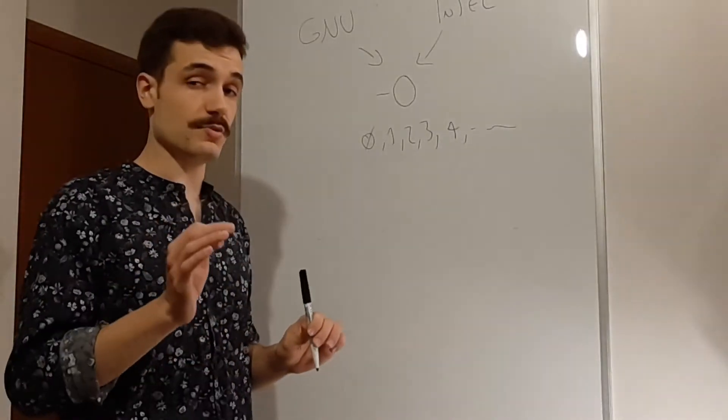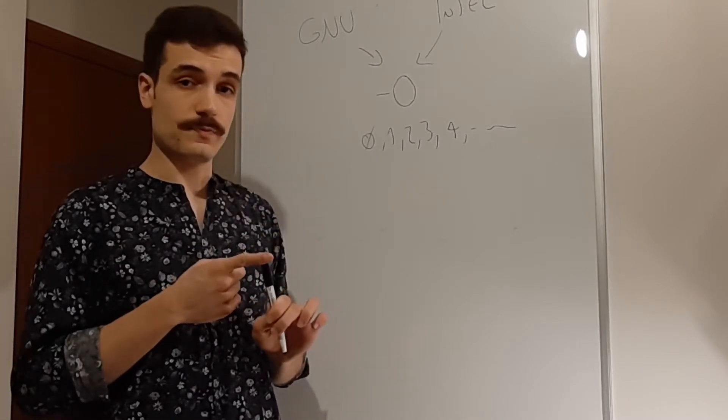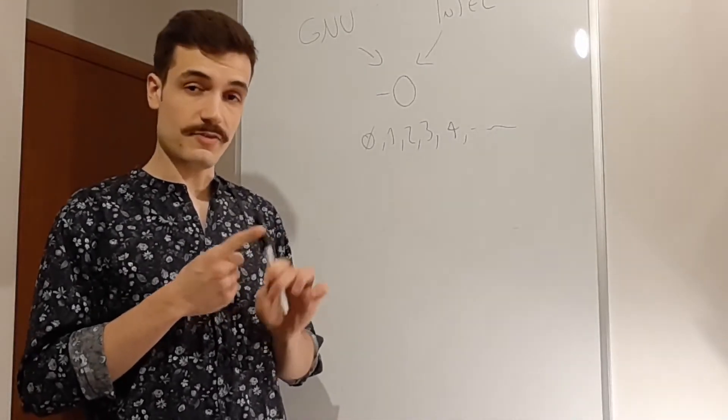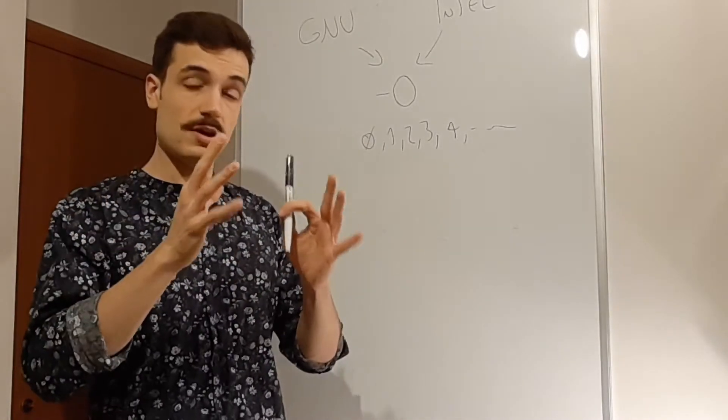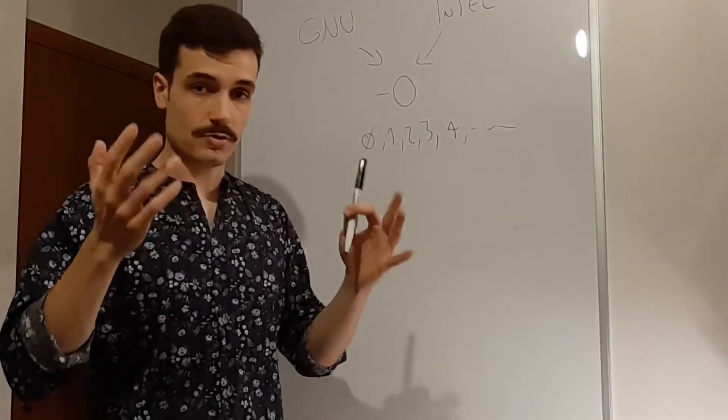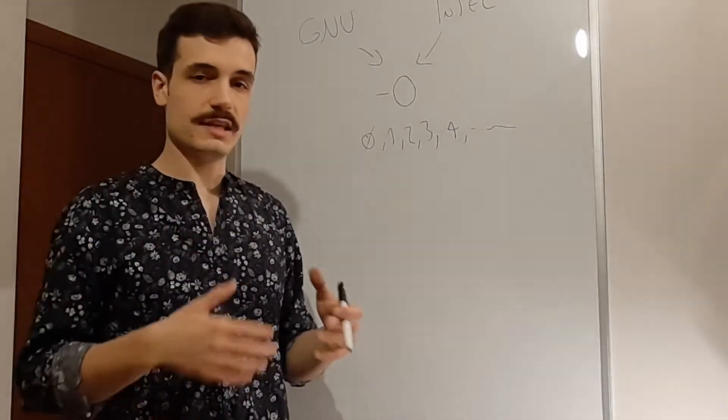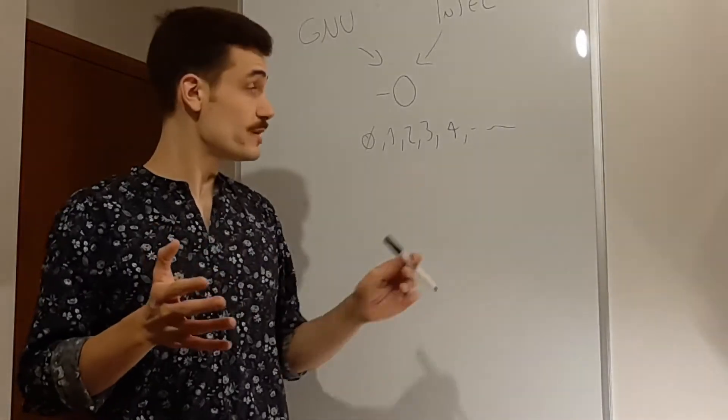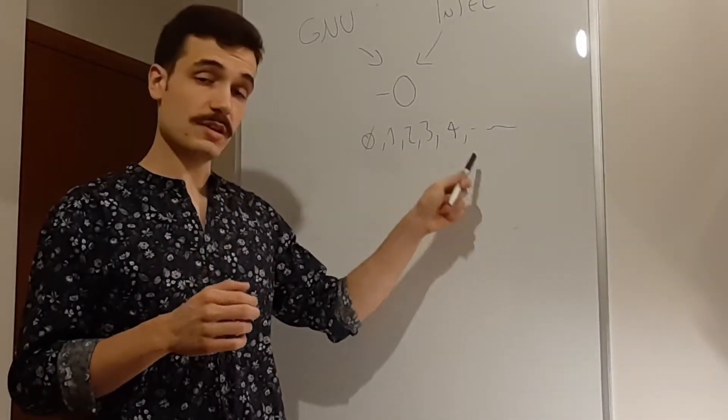So you will always have to try for two things. First, that your program still does what it has to do. Therefore, you need to have tests for your program. Not only end-to-end tests, but also tests for the single function. So unit tests, black box testing, integration testing, that's very important. Otherwise, you don't know if your program is still valid with a certain optimization.